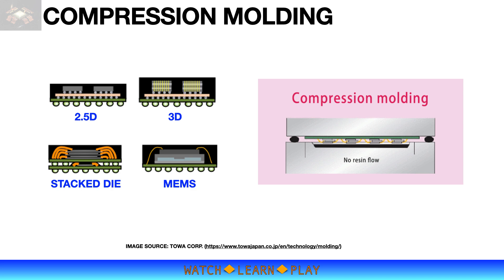The elimination of transfer pots and runners reduces the mold cycle time and significantly reduces mold material waste. With no mold gates and using release film, compression molding keeps the mold cleaning process to a minimum.